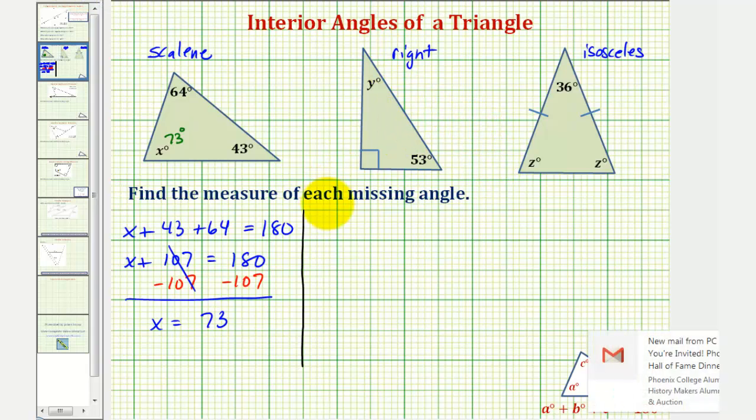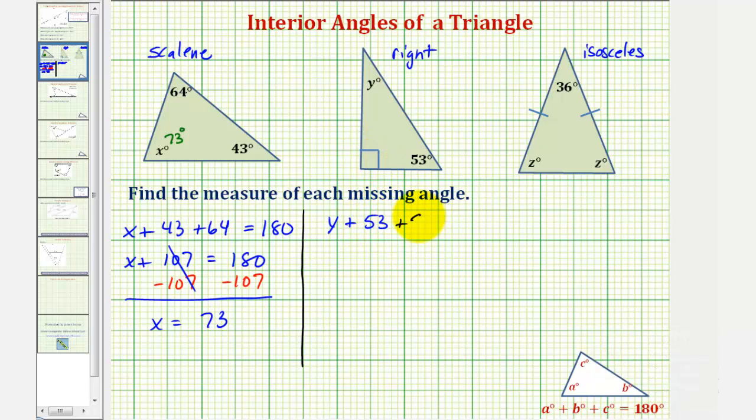Let's first use the fact that y plus fifty-three, plus ninety, must equal one hundred eighty. So we have y plus, this would be one hundred forty-three, equals one hundred eighty. Subtract one hundred forty-three on both sides. And we have y equals one hundred eighty minus one hundred forty-three is thirty-seven.